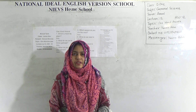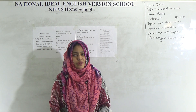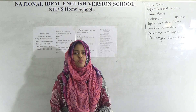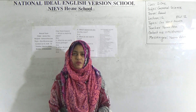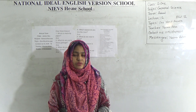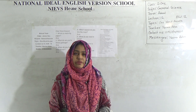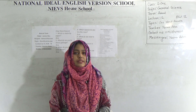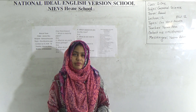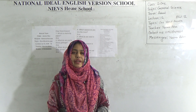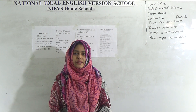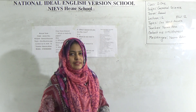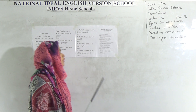Dear students, I am going to take a general science class for class Junior 1 students. Our today's topic is one word answer. We have already done this one word answer with our chapters. Today, we will do this one word answer all together and we will also discuss today about the oral sheet. We have already provided you the oral sheet. Today, we will discuss about that also. So, dear students, let us see our today's topic at a glance.